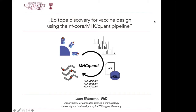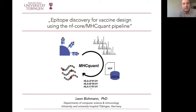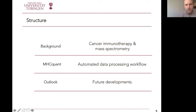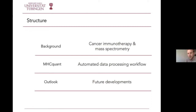Thanks. I hope the sound is working fine. Thank you for inviting me today to present the NFCore MHC Quant Pipeline that we constructed during my PhD time in Tübingen. It's an automated pipeline to analyze mass spectrometry data for the discovery of epitopes that can be used for the design of vaccines. I'll structure this talk in three parts: background on cancer immunotherapy and mass spectrometry, the most important steps of the pipeline, and a future outlook now that I'm done with my PhD.